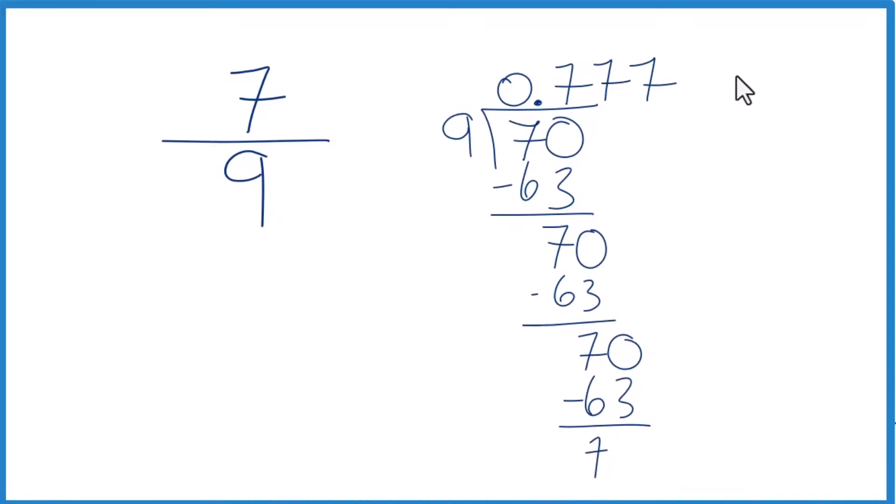So in answer to our question, when we take the fraction 7 ninths and we write it as a decimal, it's 0.777, the 7's keep repeating. So we could write that as 0.7 and then put a bar over it to show that the 7 repeats.